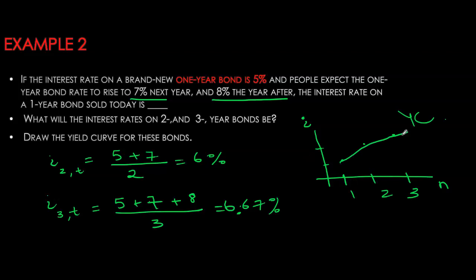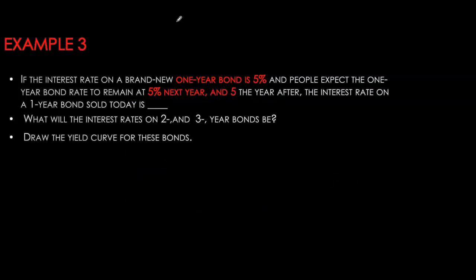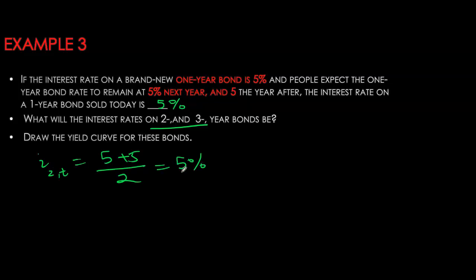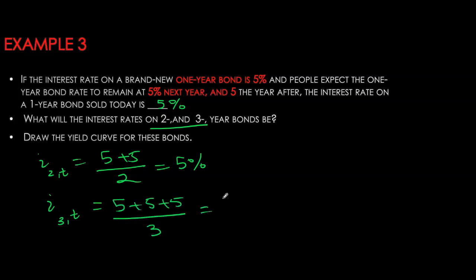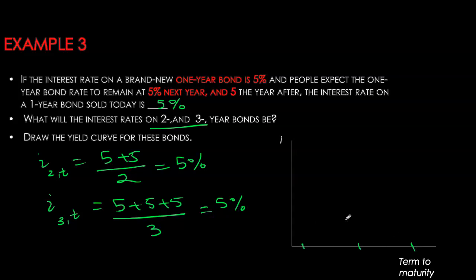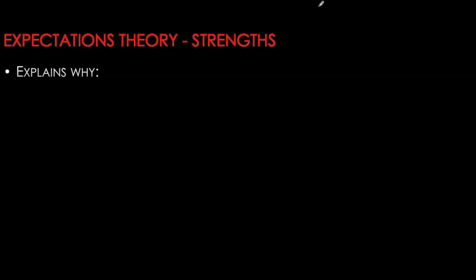That gives an upward-sloping yield curve. In another example, the current one-year yield is 5% and is expected to remain at 5% in subsequent years. The two-year bond yield is (5+5)/2 = 5%, and the three-year bond yield is also 5%. So the yield curve is flat at 5%. If you expect short-term yields to stay constant, long-term yields also stay constant. If you expect short-term yields to rise, long-term yields also rise, giving an upward-sloping yield curve.